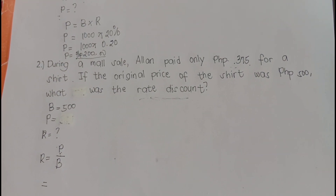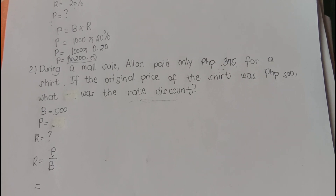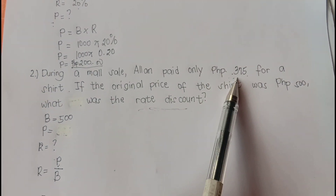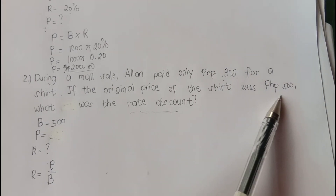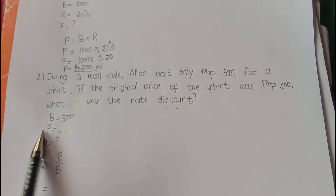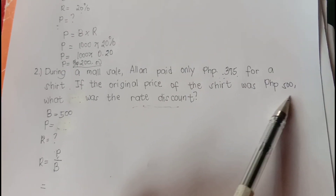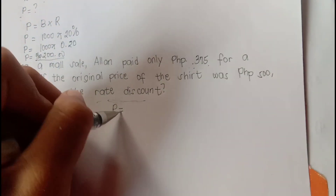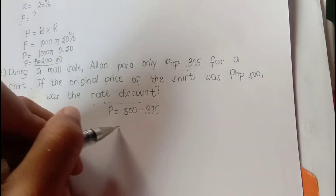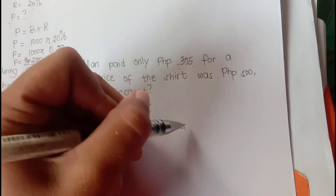Number 2: During a mall sale, Alan paid only 375 pesos for a shirt. If the original price of the shirt was 500 pesos, what was the rate discount? The 500 pesos is the original price, which is the base. To get the percentage, we subtract 375 from 500 pesos. P is equal to 500 minus 375, which is 125. So this is the discount, or the percentage.